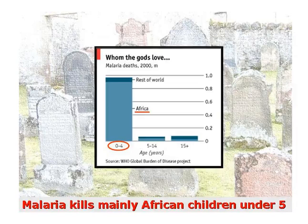This chart shows that malaria mainly kills African children under the age of five. The other part of the world where malaria kills children is Papua New Guinea, but it's mainly African children who are killed by malaria.